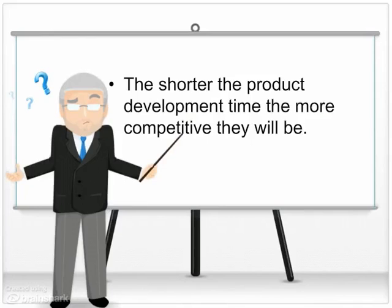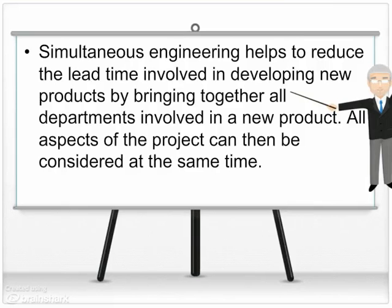Others can see consumer trends change very quickly. For example, Kodak struggled to develop new products as consumers moved towards digital technology. Simultaneous engineering helps to reduce the lead time involved in developing new products by bringing together all departments involved in a new product, so all aspects of the project can be considered at the same time. For example, human resources can consider the implications on the workforce at the same time as production considers the purchasing of new machinery. This will shorten product development times and firms can bring their new product to market faster than the competition.